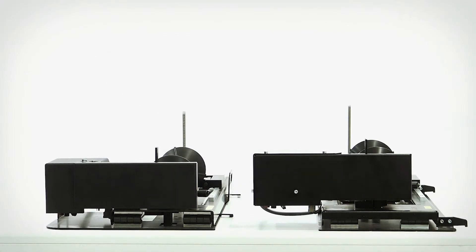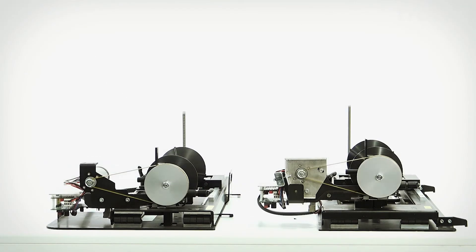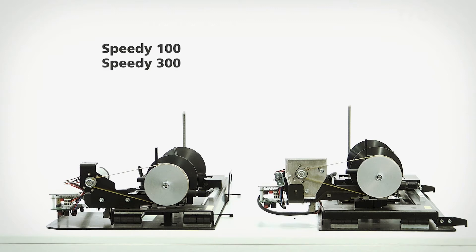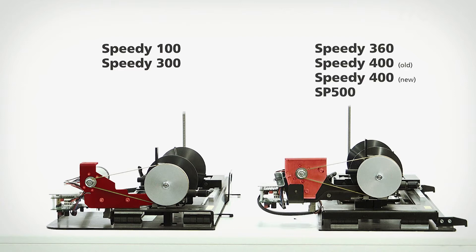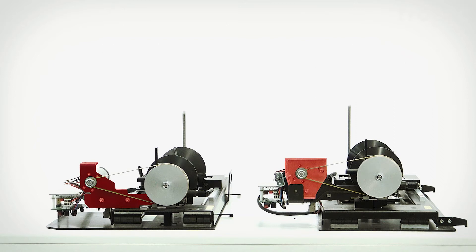To mount the drive roll mechanism, first remove the covers. The Speedy 100 and 300 have this style version, and the rest of the rotaries have the same style version as the Speedy 360. The only difference is the belt tension mechanics.